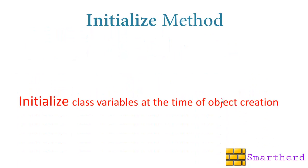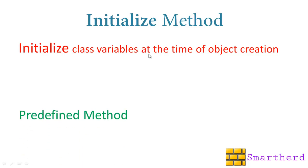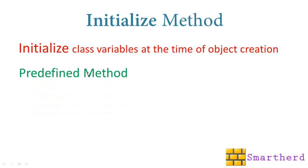First of all, what is the initialize method? This is a method — as the name indicates — it helps you to initialize all the variables at the time of object creation. When you create an object, the object variables found inside the class get initialized. Secondly, it is a predefined method. You can't use other than this keyword; this keyword is fixed: initialize.